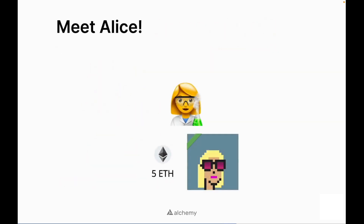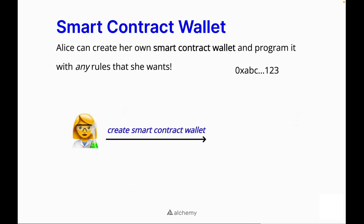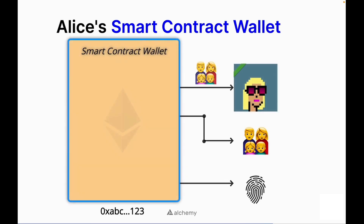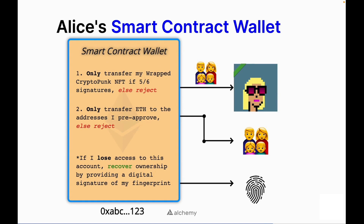Meet Alice. She also owns valuables that she wants to protect and she doesn't want Bob's experience. This is where smart contract wallets can help her. Alice can create her own smart contract wallet and program it with any rules that she wants. For each of her assets, her smart contract wallet can look like this: only transfer my wrapped CryptoPunk NFT if 5 out of 6 digital signatures are provided, else reject the transaction. Only transfer ETH to the addresses she pre-approves, else reject. Alice can even program in her own custom recovery, such as providing a digital signature of her fingerprint to gain access back to the account.